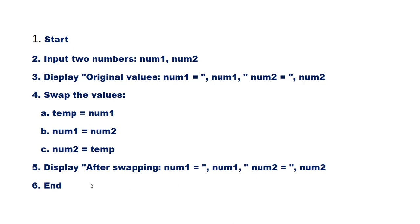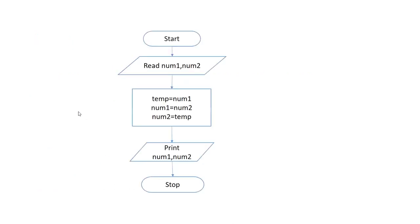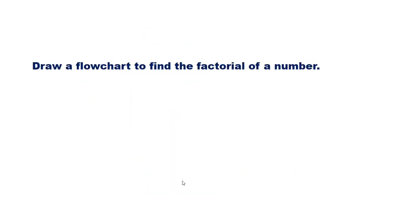Now let us draw the flowchart. Start. Read num1 and num2. Set temp equal to num1, num1 equal to num2, num2 equal to temp. Print num1 and num2. Stop.